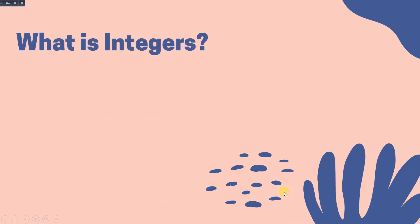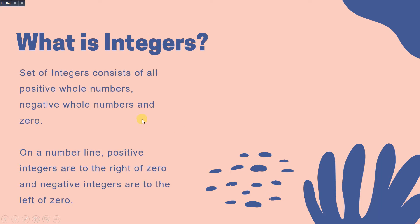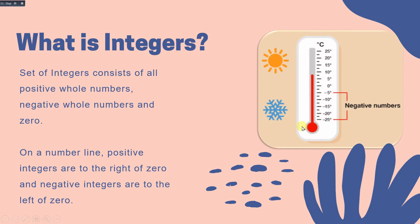Now let us define an integer. Integers consist of all positive whole numbers and all negative whole numbers, including 0. On a number line, positive integers are to the right of 0, and negative integers are to the left of 0. For example, on a thermometer, numbers below 0 are negative and numbers above 0 are positive — this is one real-life application of integers.